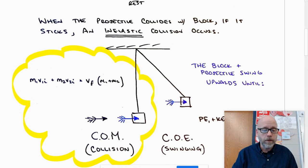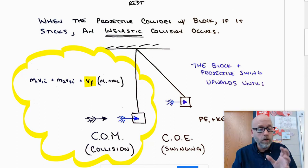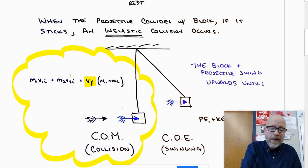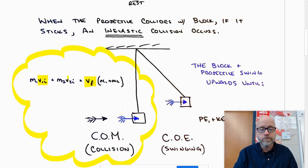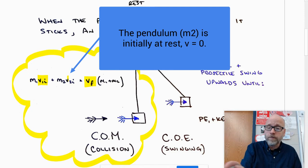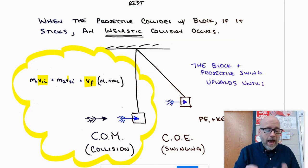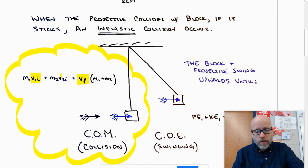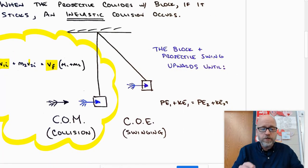Now what's beautiful about that is that we really have two sets of problems here. Our first thing that occurs is we have a collision, and using conservation of momentum, I can come up with a formula. Now when I do that, I do not know the final velocity of the pendulum-ball system, and I don't know the velocity of the ball to begin with, so I do have two unknowns.